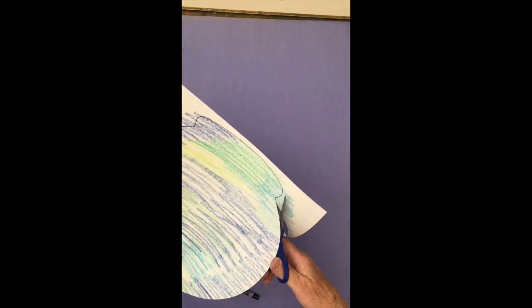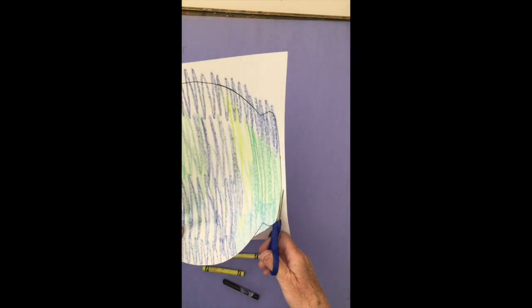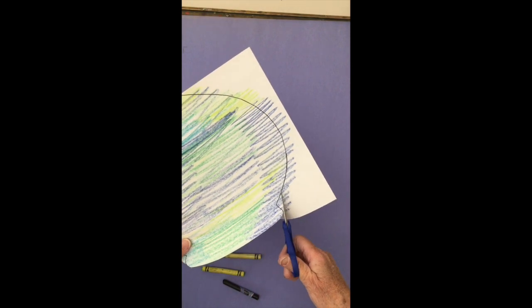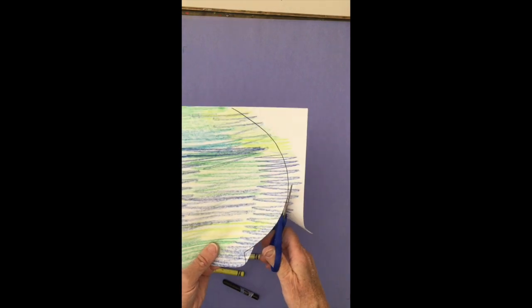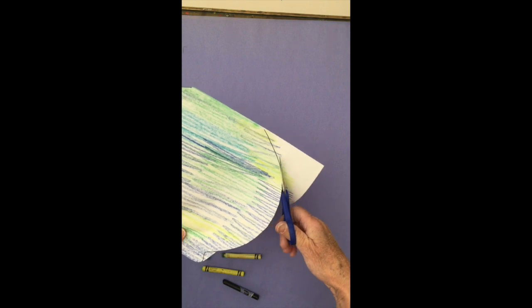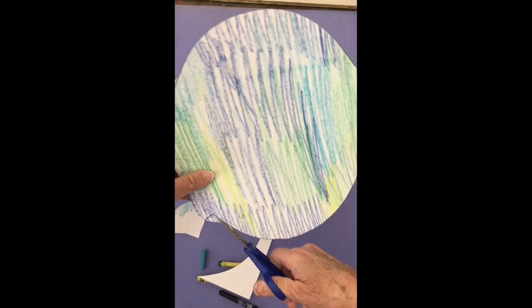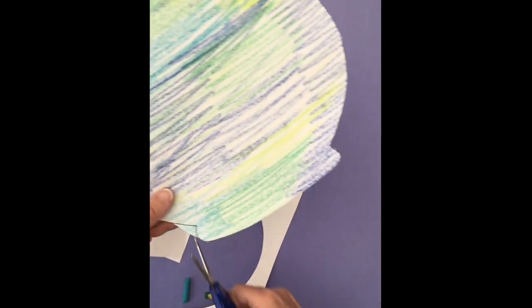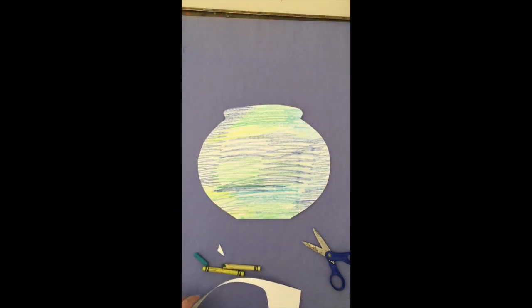When I get to this little curve or divot I'm going to practice what I've done with our fingers and some of our other shapes where we had to take out a little triangle piece like the teeth in your crocodile. I'm just going to skip right over it and keep cutting. Now I can go back and it's so much easier to cut two sides of a triangle, pop that out and get that nice little curve. My goldfish bowl looks ready for some fish.